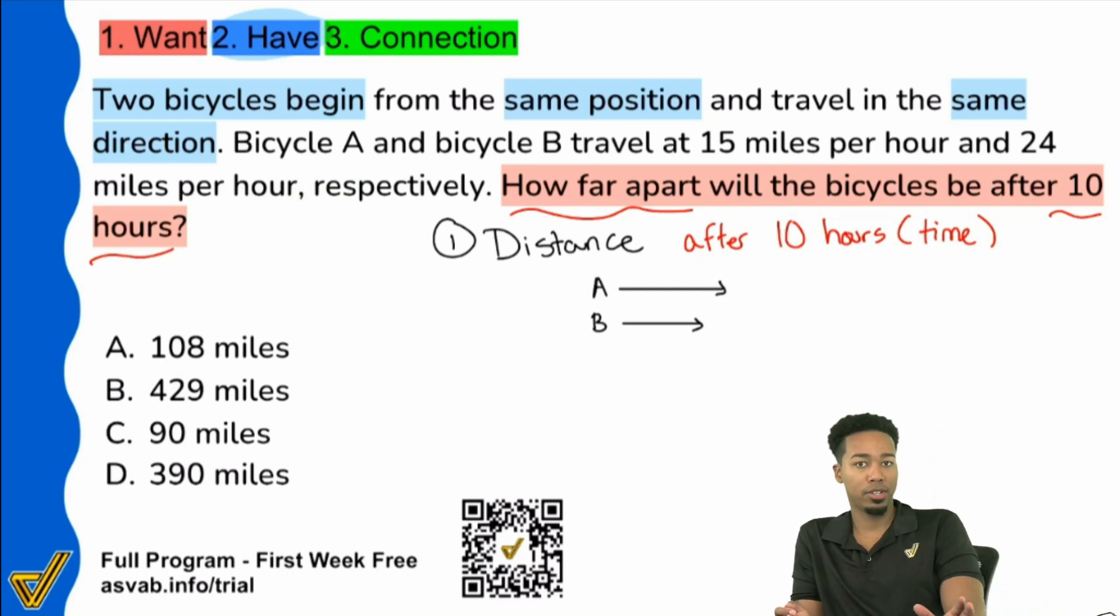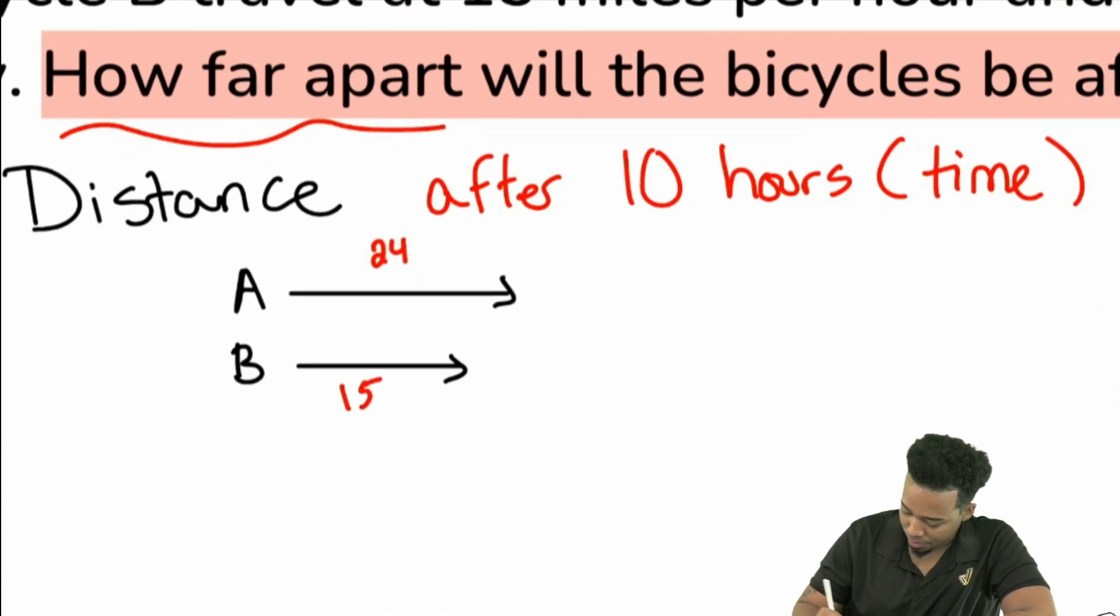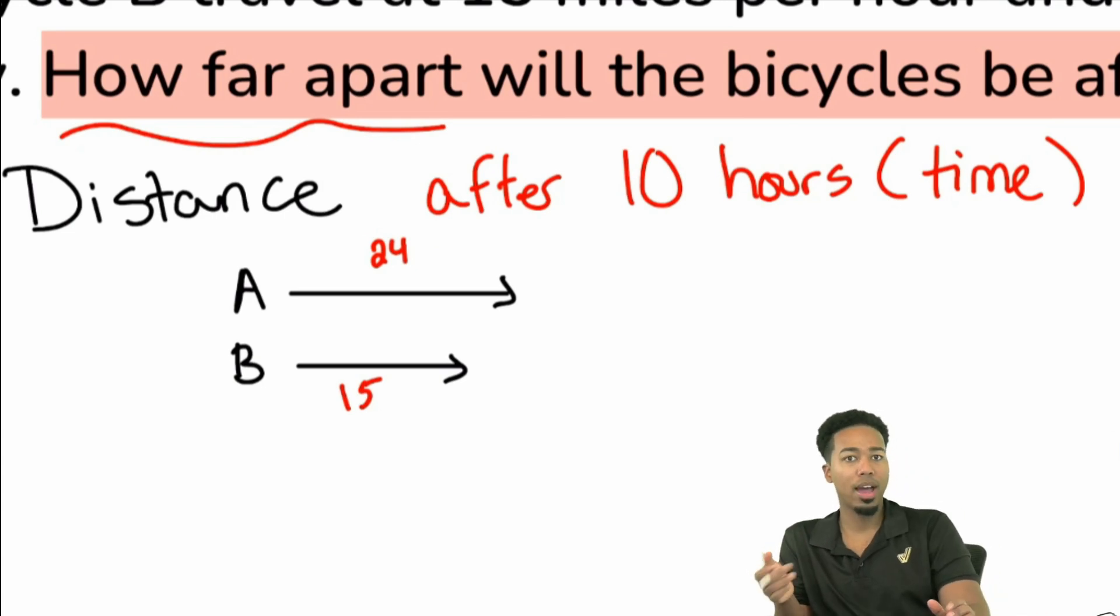So what does that mean for us? Well, for those of you that are in my program and you've seen this type of problem before, you know exactly what this means. We're going to take those rates and we're going to subtract. And so why do we know that? Well, the reason very quickly is this. Let's go ahead and say that bicycle A, I know I'm going to switch it up. I know B is the one that's going 24, but let's say A is going 24 and B is going, I believe it was 15.